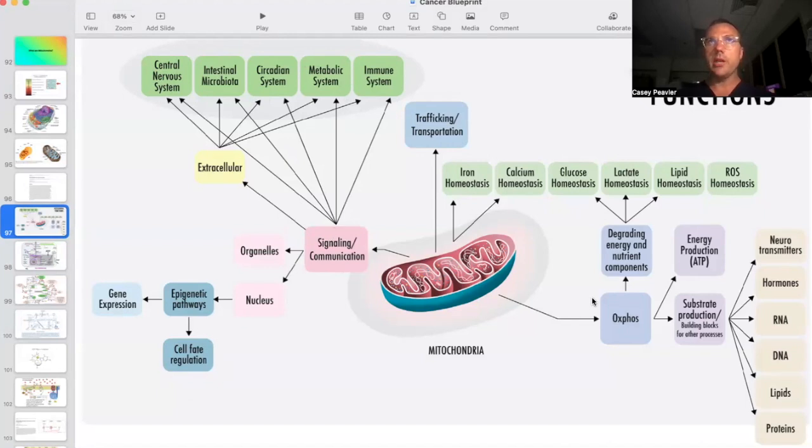It used to be thought that reactive oxygen species were all bad and we needed large amounts of antioxidants to quench this. But believe it or not, if you were to do that, you would actually cause damage. Those ROS in proper ratios at the right times are actually used as cellular communicators both inside the mitochondria and into the nucleus to control gene expression. It's important for lactate homeostasis, glucose homeostasis, calcium homeostasis, iron homeostasis, traffic and transportation of biomolecules, communication with other parts of the cell and throughout the body. It's intimately involved with the nucleus, epigenetics, and gene expression, important for cell fate regulation such as apoptosis. It's involved with the circadian rhythm, gut microbiome, central nervous system, autonomic nervous system, as well as metabolism and immunity.